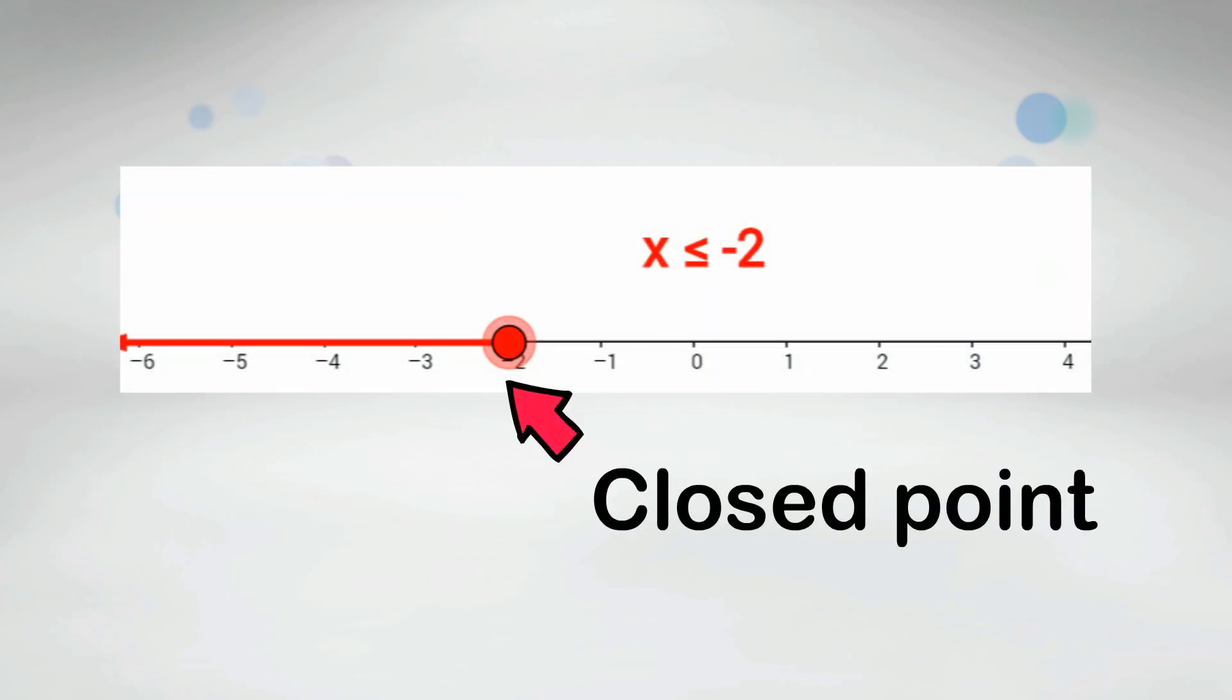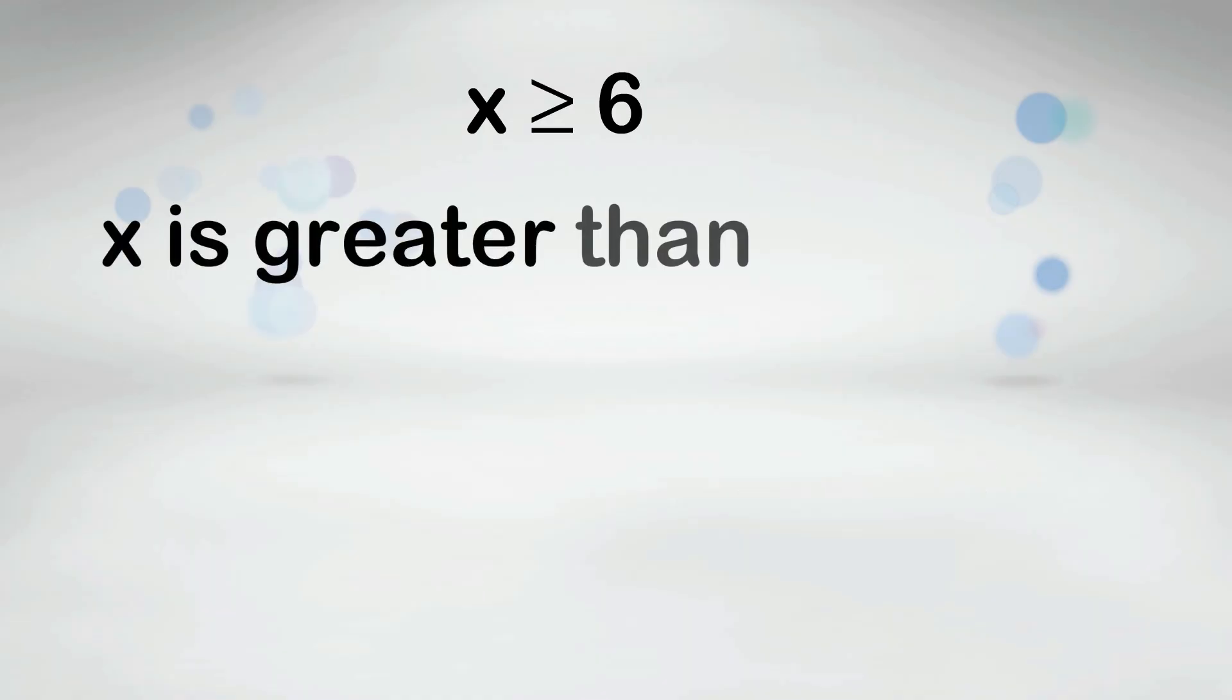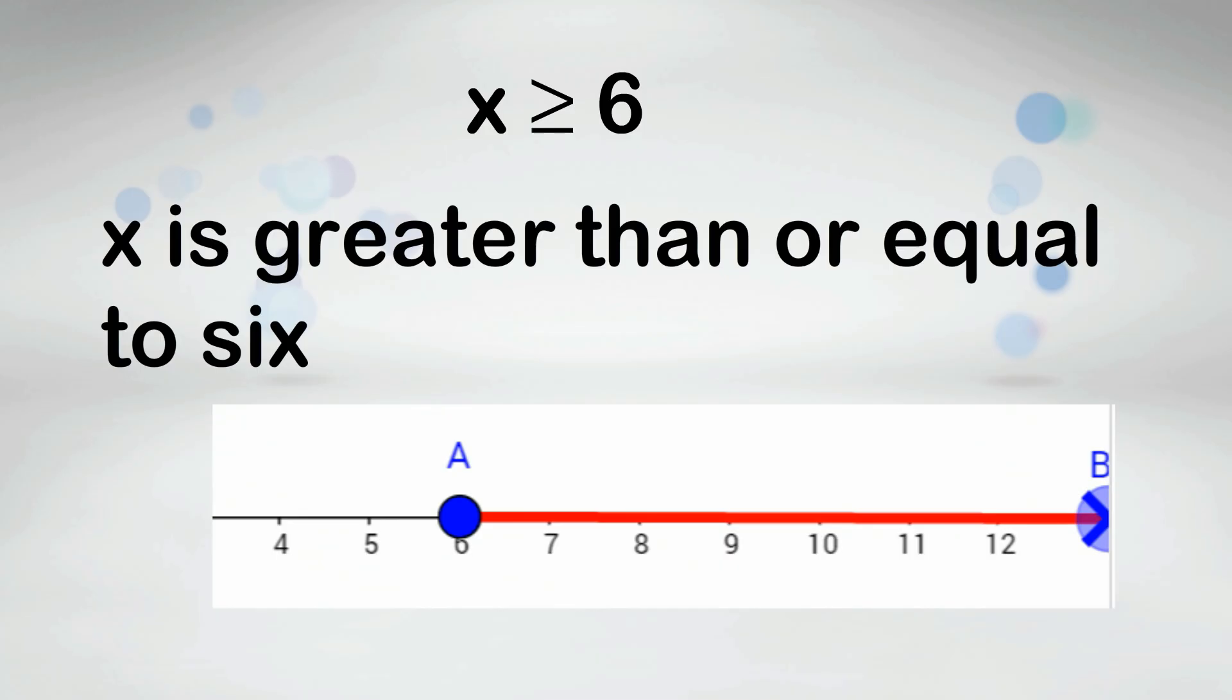A closed point means that the number is included in the solution. X is greater than or equal to 3. A closed point is used because the 3 is included. X is greater than 6. Again the closed point is used because the 6 is included.